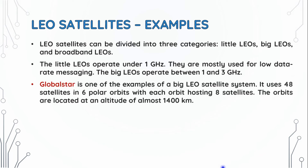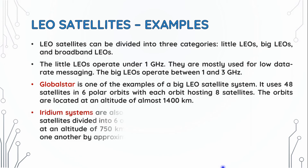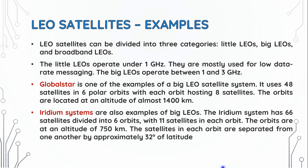Globalstar is one example of a Big LEO satellite system. It uses 48 satellites in 6 polar orbits, with each orbit hosting 8 satellites. The orbits are located at an altitude of almost 1,400 km.